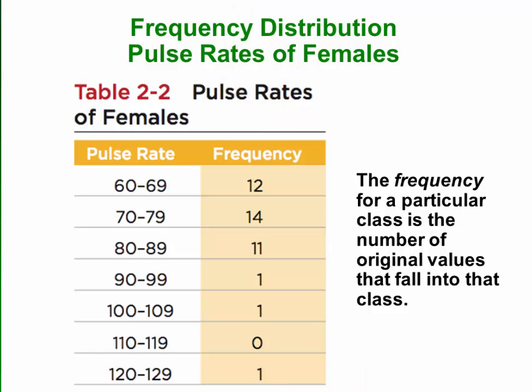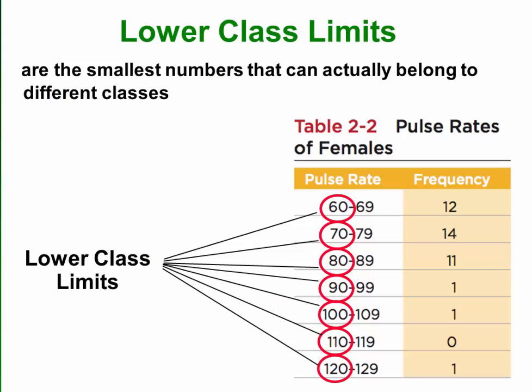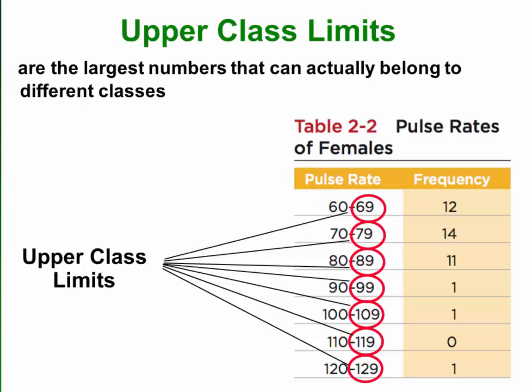One of the terms or definitions you need to know are class limits, specifically lower class limits and upper class limits. Here we see the lower class limits of each one of these classes. The lower class limits are the smallest numbers that can actually belong to the different classes. Similarly, the upper class limits are the largest numbers that can actually belong to each one of the different classes.